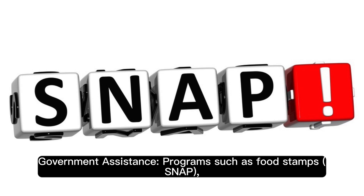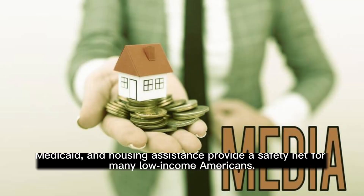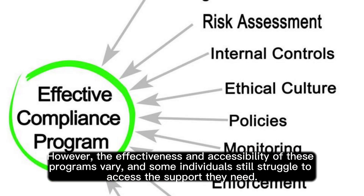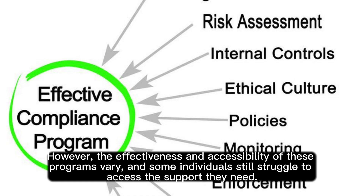Programs such as food stamps (SNAP), Medicaid, and housing assistance provide a safety net for many low-income Americans. However, the effectiveness and accessibility of these programs vary, and some individuals still struggle to access the support they need.